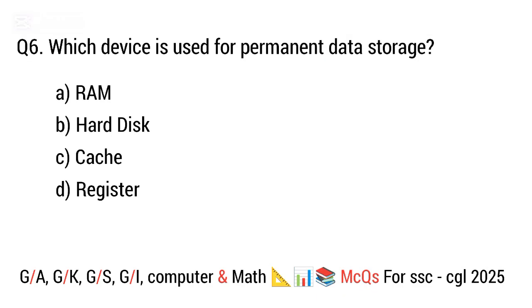Question 6. Which device is used for permanent data storage? The right answer is option B. Hard disk.